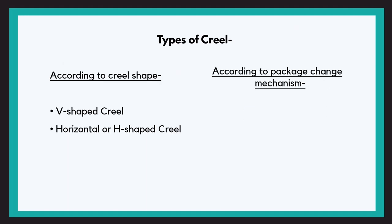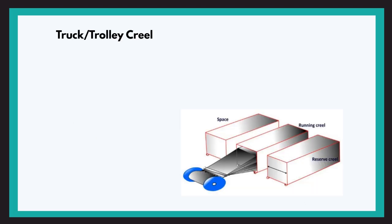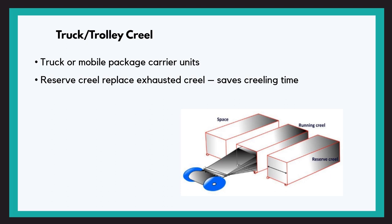According to the package change mechanism, there are four types of creels: trolley creel, swivel frame creel, continuous chain creel, and magazine creels. The truck or trolley creel has a reserve truck which can be pushed in place of an exhausted creel, saving the creeling time — that is, the time required to pull out the empty cone shells and push new ones in their place.